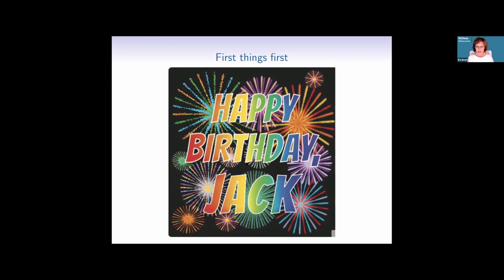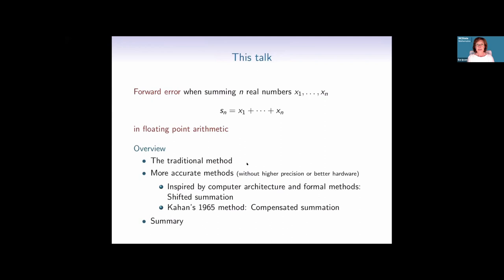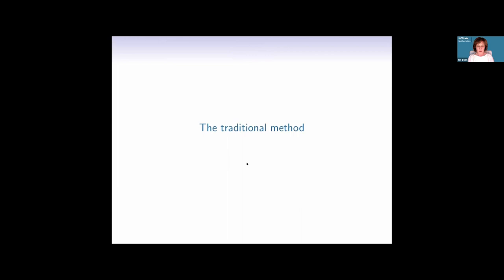We are in the business of summation of real numbers in floating-point arithmetic. It is all the rage these days to do mixed precision, but we are going to be old-fashioned and operate in one and only one precision, without recourse to other precisions or better hardware like wider accumulators. I'll talk about two methods: shifted summation and Kahan's compensated summation.